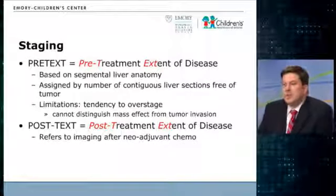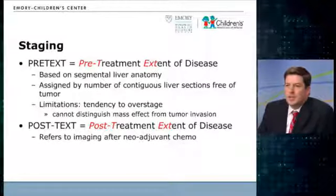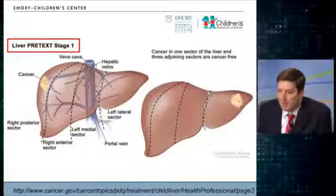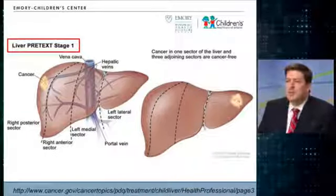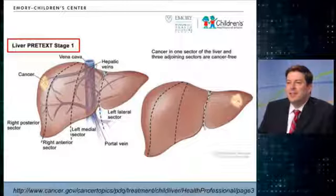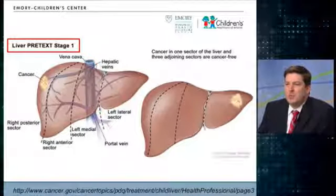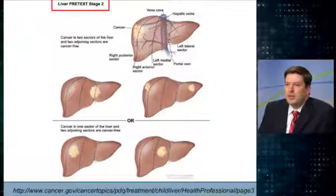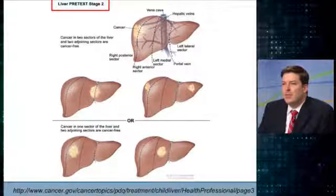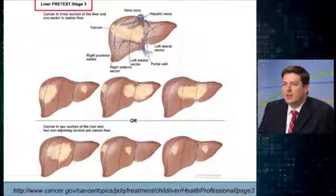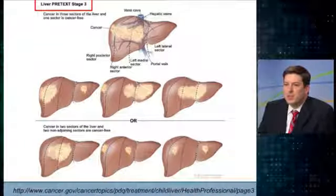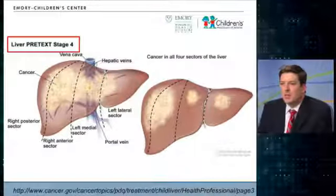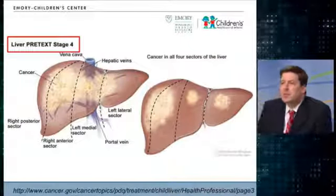Post-text, in contradistinction, refers to extent of disease after neoadjuvant chemotherapy has been given. PRETEXT stage one involves one-sector disease, two involves two sectors, three involves three sectors where one sector is specifically spared since it's not necessarily three contiguous sectors, and four is multifocal disease affecting all sectors — which is the image I showed.